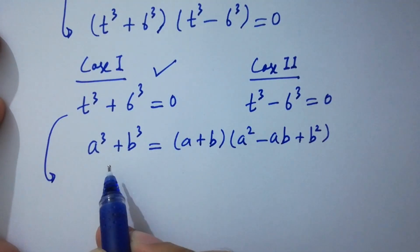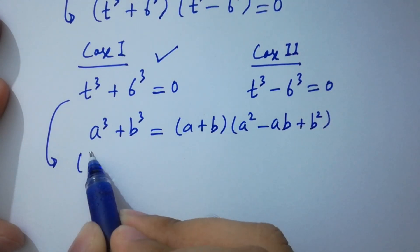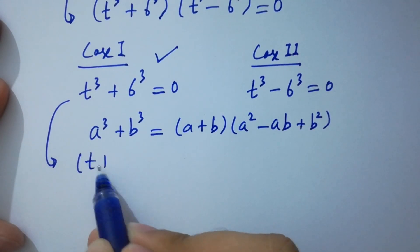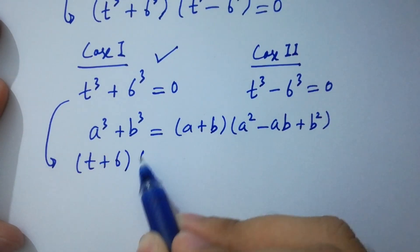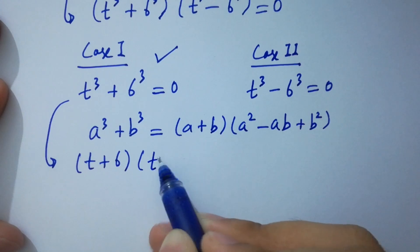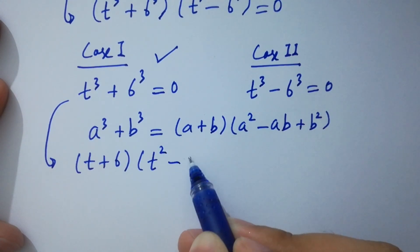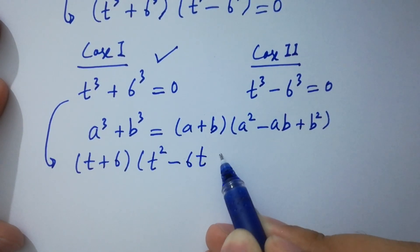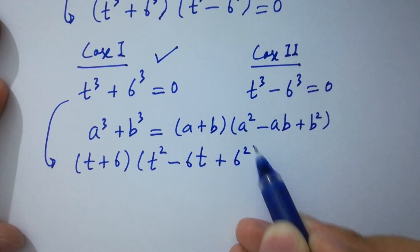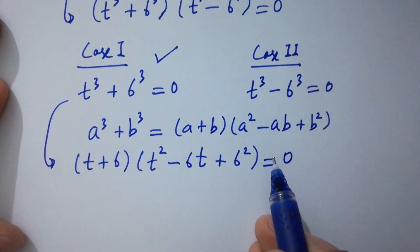Applying the formula, we get (t + 6)(t² - 6t + 36) = 0.